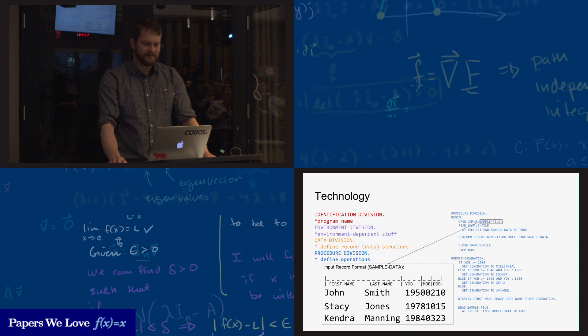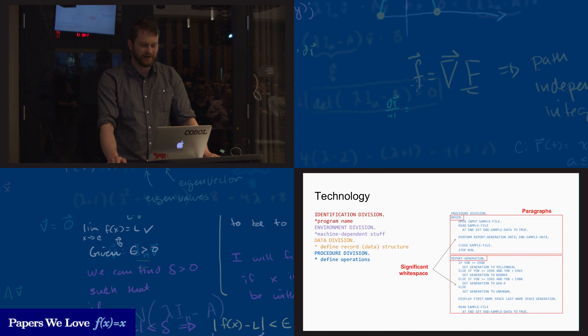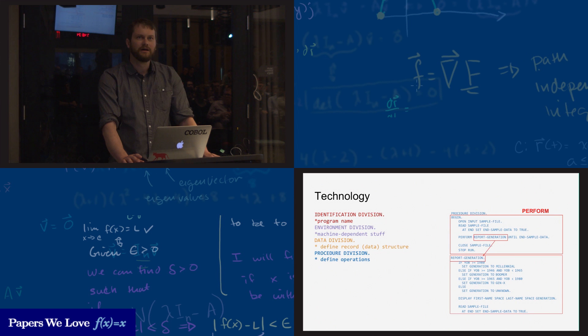The procedure division contains the logic of the program. This particular program reads input records with names and birth dates and prints out records of names and the generation that that person was from. So it'll tell you if you're a millennial or Gen X or a boomer. If there's anyone who's older than that, you are very important, I just didn't have time to keep writing if statements. The program is broken up into two paragraphs, one called begin and the other one called report generation. The sentences in the paragraph are indented. Anything that's indented under that label is a sentence within that paragraph, so white space becomes significant, and we still have that to this day.